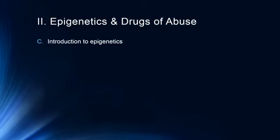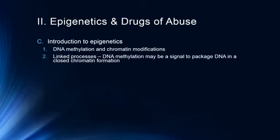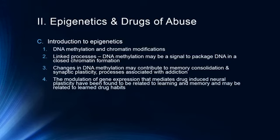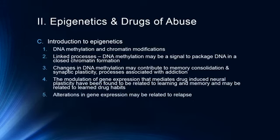A more thorough introduction to epigenetics: we talked about DNA methylation, and another linked process is chromatin modifications. DNA methylation may be a signal to package DNA in a closed chromatin formation. Changes in DNA methylation may contribute to memory consolidation and synaptic plasticity — processes associated with addiction. Addiction, after all, is a learned process: the brain has learned to associate drugs with specific outcomes. The modulation of gene expression that mediates drug-induced neuroplasticity has been found to be related to learning and memory, and may be related to learned drug habits. We have good reasons to believe epigenetic alterations are associated with drug addiction, and alterations in gene expression may be related to relapse.